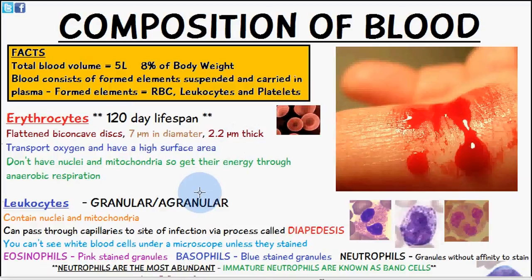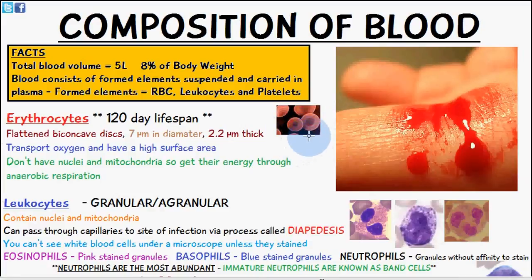To begin, we're going to first talk about erythrocytes. They have a 120-day lifespan and are flattened biconcave discs which are 7 micrometers in diameter and approximately 2.2 micrometers thick. They transport oxygen and have a high surface area. They don't have nuclei or mitochondria, so they get their energy through anaerobic respiration.